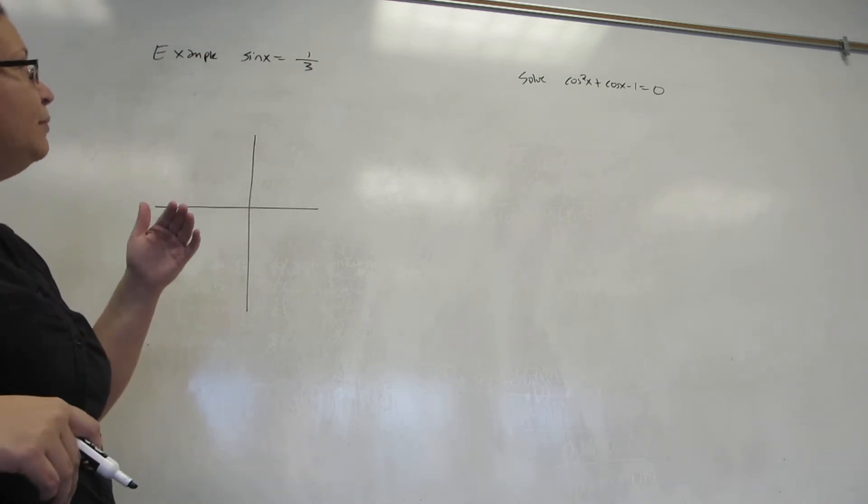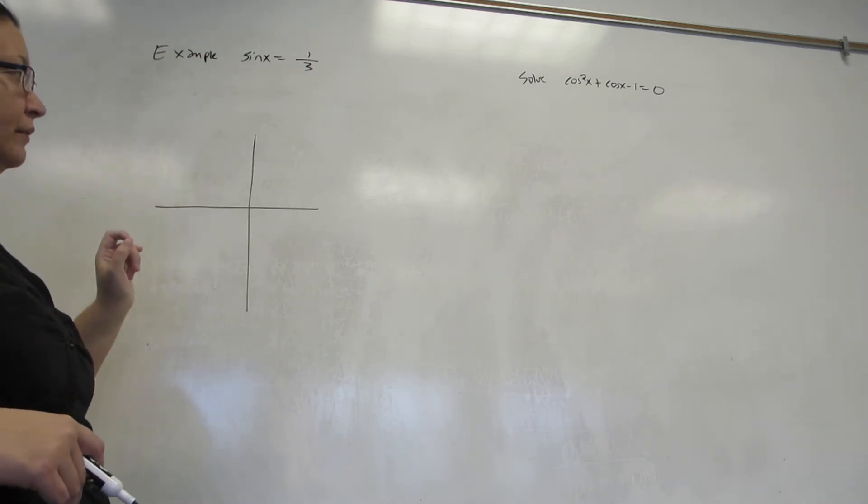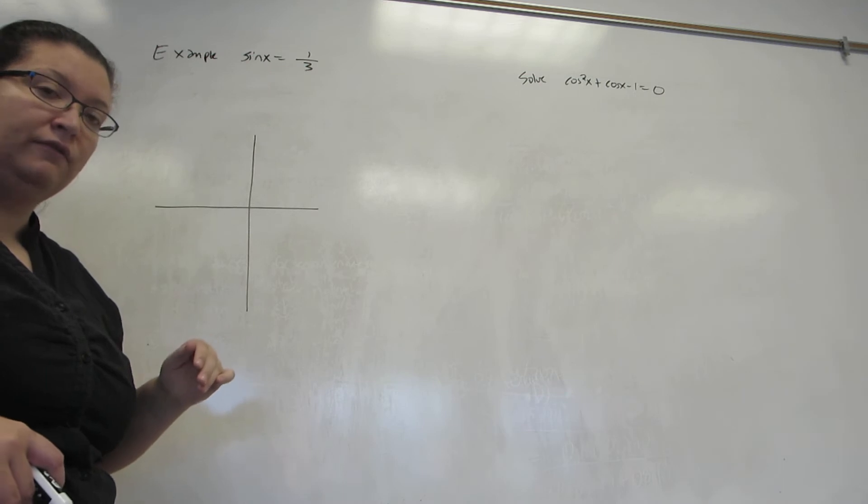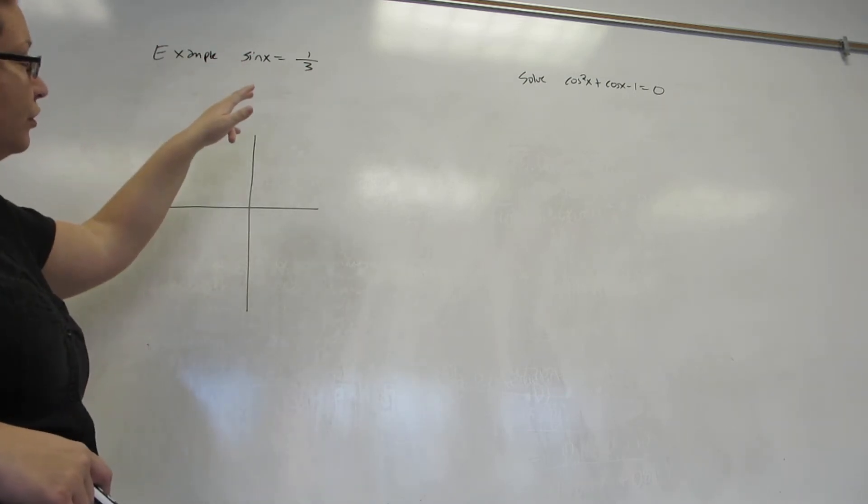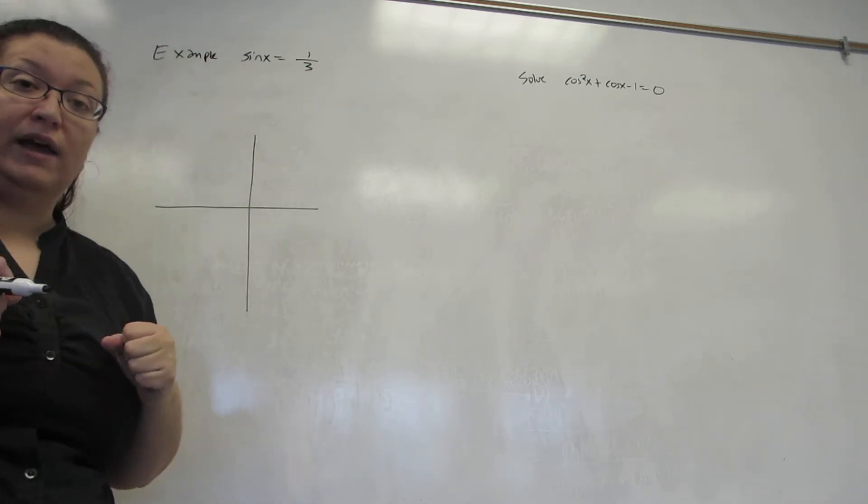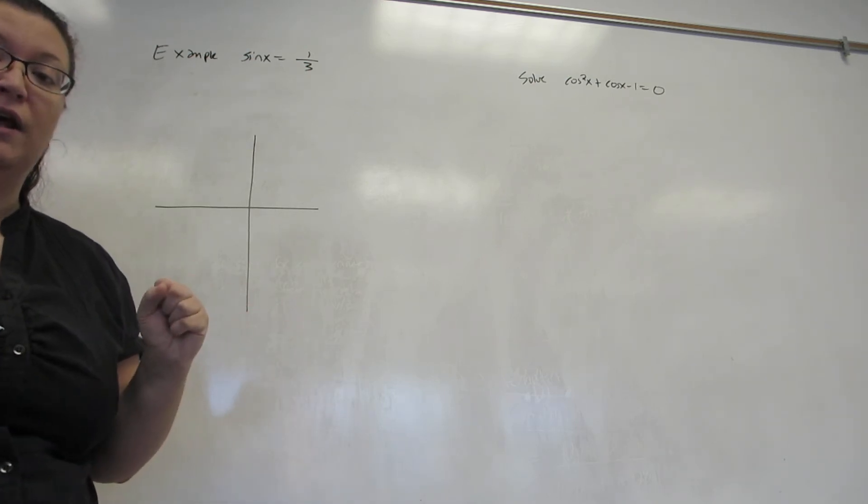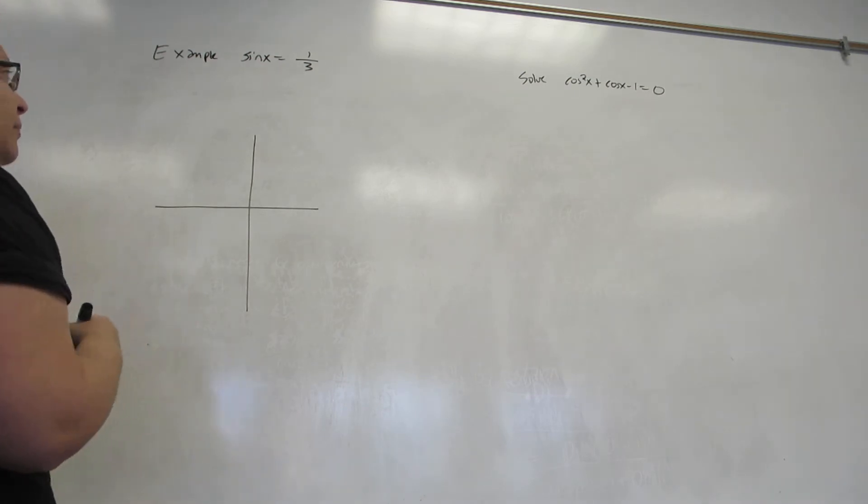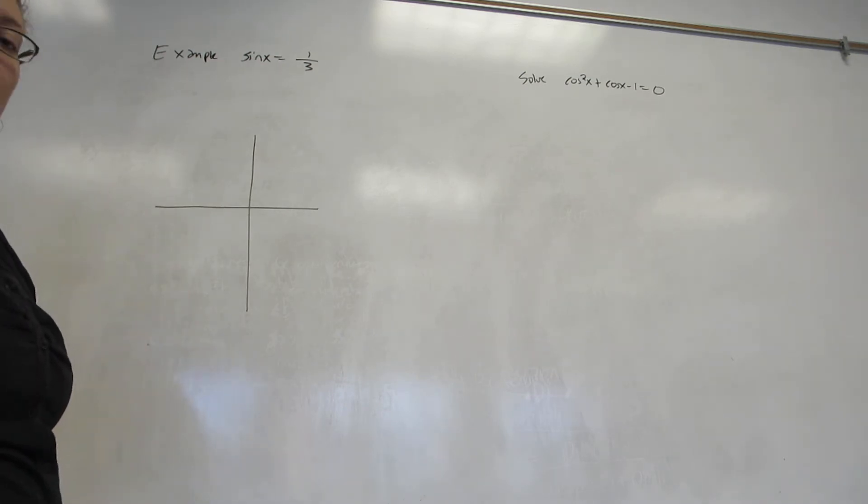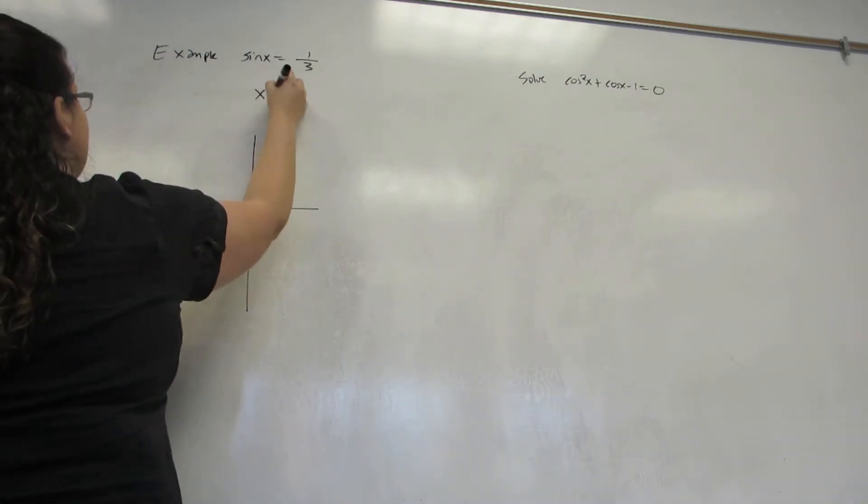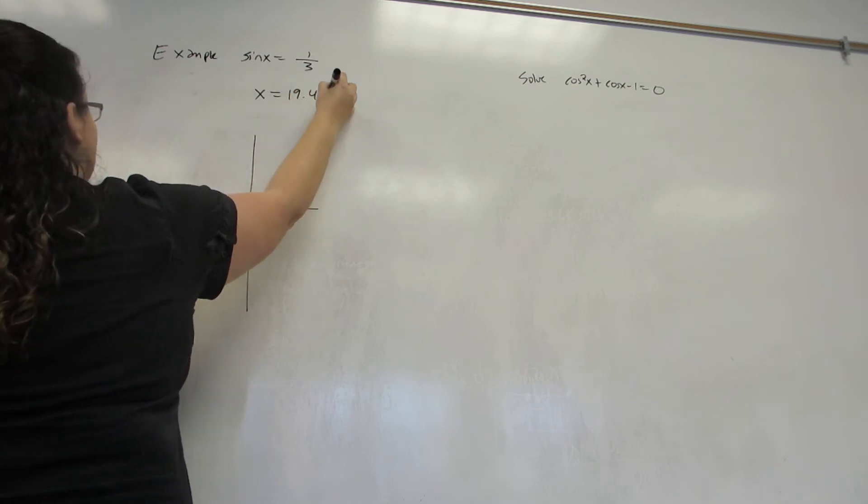So we're going to use our calculator. You'll notice that over the sine button is a sine inverse button. So you'll go second, sine inverse, enter one-third, and compute that. The only thing you have to be careful of is to make sure your calculator is in either radians or degrees, depending on how you want your answer. Here I'm going to do it in degrees. When I entered it into my calculator, I got the answer 19.47 degrees.